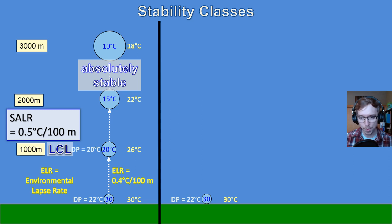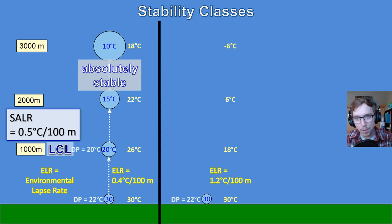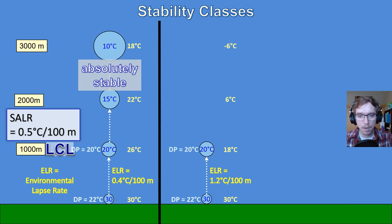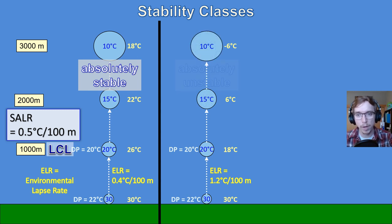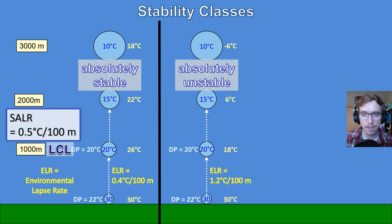In the next example with the same setup — dew point 22°C, air parcel 30°C — the environmental lapse rate changes to 1.2°C per 100m instead of 0.4°C. By the time we get to 3000m, the environmental temperature is negative 6°C. The parcel changes at the same rate as before, hits its LCL, and by 2000m is at 10°C. This is absolutely unstable — the air parcel is warmer almost immediately than the surrounding environment and continues to rise due to its buoyancy.